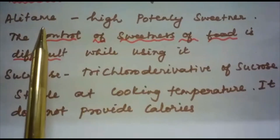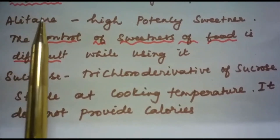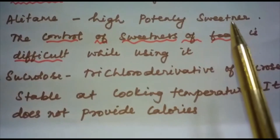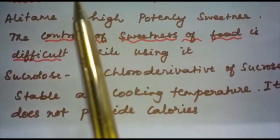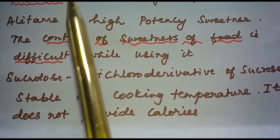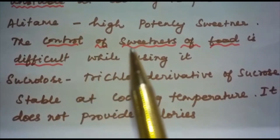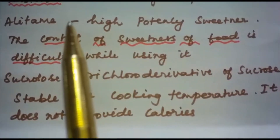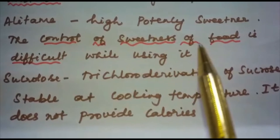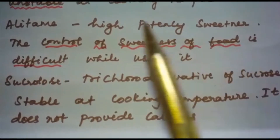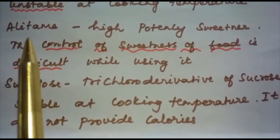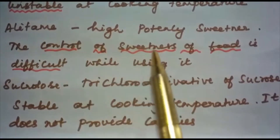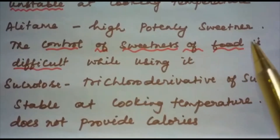Alitame is also an artificial sweetener. It is a high-potency sweetener and it is more stable than aspartame, but the main disadvantage is that the control of sweetness of food is difficult while using alitame.